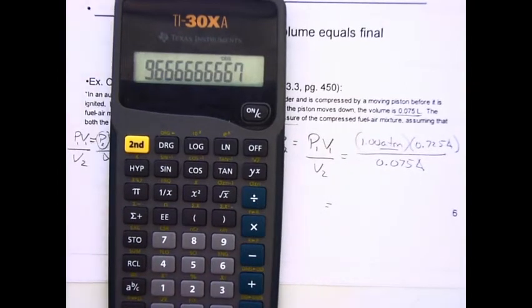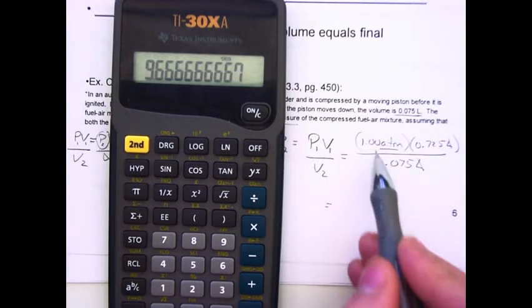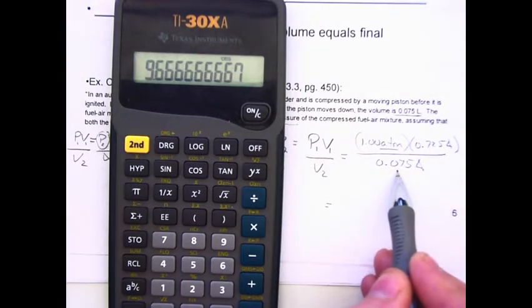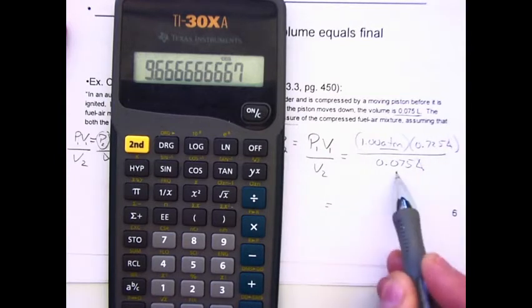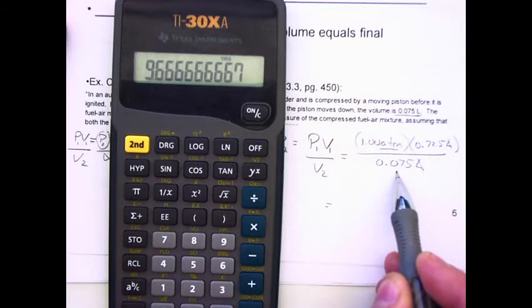Now, for significant figures, I look at all the numbers that I enter into the formula. Whichever one has the fewest, that's how many the answer must have. Since this has 3, this has 3, but this only has 2, the answer has to be rounded off to two digits.